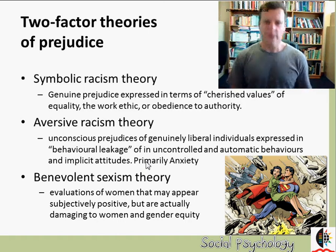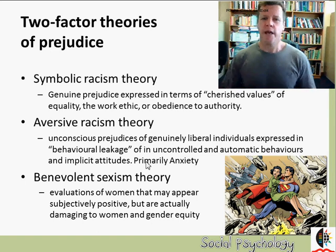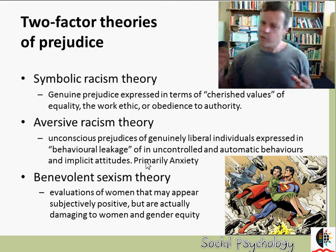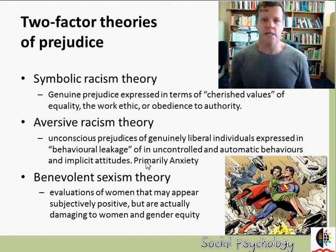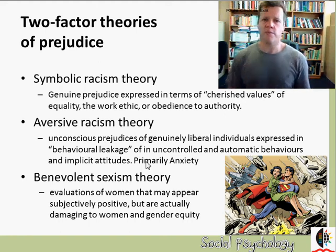A second theory is aversive racism theory. This applies to people who might not even view themselves as prejudiced — who see themselves as genuinely liberal and anti-prejudiced — and yet deep down, unconsciously, they still carry from culture and early childhood experiences prejudiced mental associations they are not aware of. These can manifest as signs of anxiety in interracial contact and can affect how people interact with and behave toward each other.